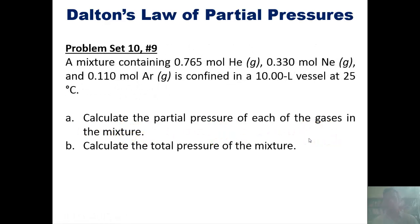So let's take a look at a problem. A mixture containing 0.765 moles of helium, 0.330 moles of neon, and 0.110 moles of argon is confined to a 10-liter vessel at 25°C. Calculate the partial pressure of each gas in the mixture and calculate the total pressure of the mixture. Once again, I'm not doing this problem here, but you can click the link to see it done elsewhere.